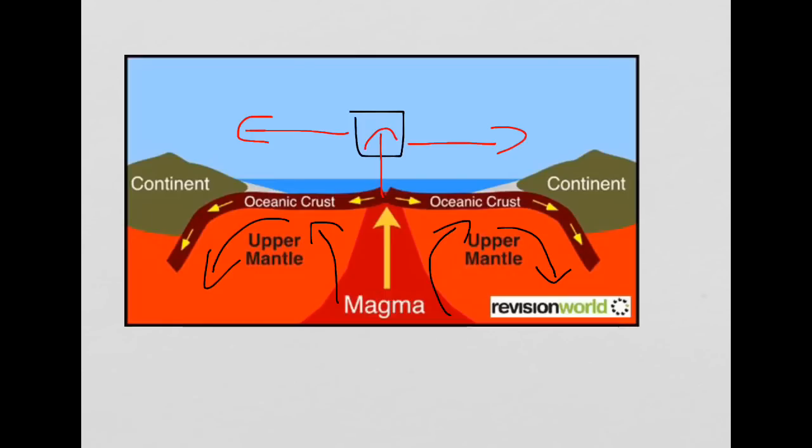That magma cools due to the presence of the seawater and it forms new crust. Therefore, the crust in the area in the centre of this diagram is much younger than the crust at the two edges. That's a constructive plate boundary.